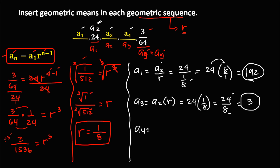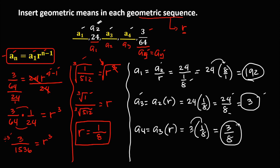For a sub 4, we multiply a sub 3 by the common ratio: a sub 4 equals a sub 3 times 1 over 8. So 3 times 1 over 8 equals 3 over 8. Therefore a sub 4 is 3 over 8. So the unknown values are: a sub 1 is 192, a sub 3 is 3, and a sub 4 is 3 over 8.